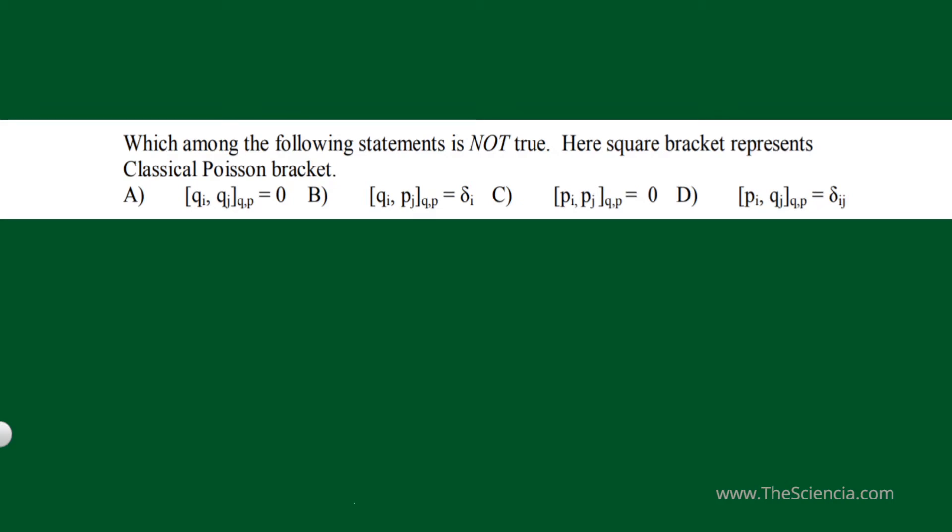This is a previous set question. I told you the Poisson bracket with the same variable will be equal to zero. That is, option A is correct and option C is also correct.